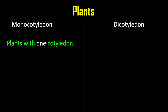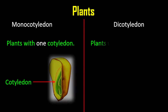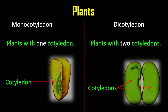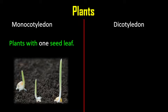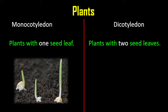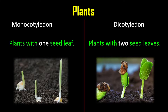For monocotyledon, those are plants with one cotyledon. For dicotyledon, those are plants with two cotyledons. Monocotyledons are plants with one seed leaf — notice the germinating corn, where only one seed leaf is present. For dicotyledon, those are plants with two seed leaves — notice the germinating bean with two seed leaves.